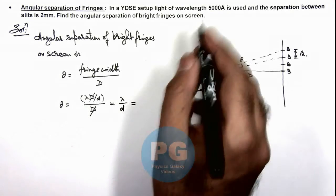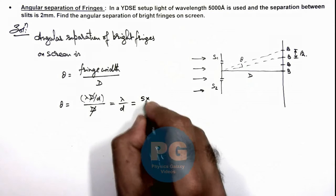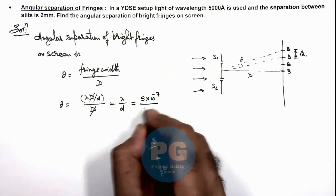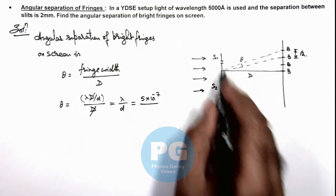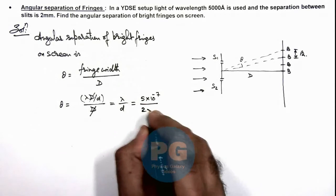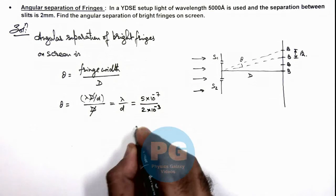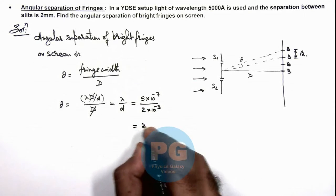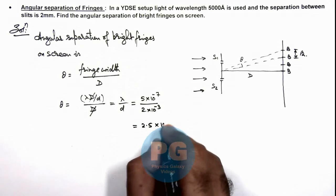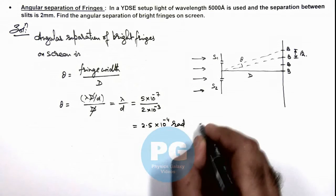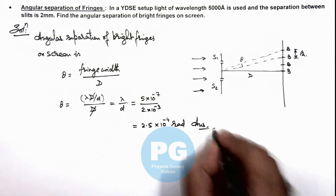So if we substitute the value of lambda, it is 5 into 10 to power minus 7 meter, and small d, the slit separation we are given as 2 into 10 to power minus 3 meter, which is 2.5 into 10 to power minus 4 radian. That is angular separation and the result of this problem.